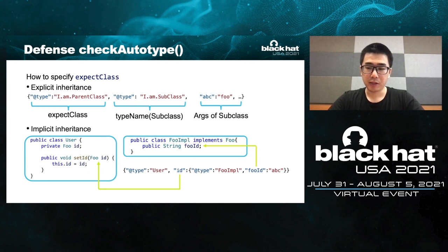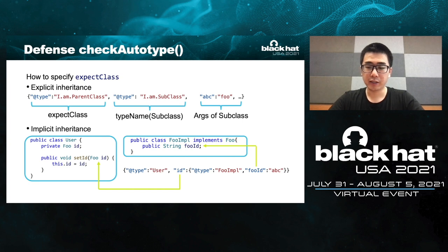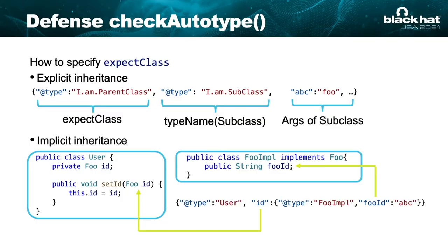The expectClass means inheritance. There are two forms of inheritance in FastJSON. The first is explicit inheritance: you start a JSON object string with two '@type' keys. The first '@type' value is the expectClass, and the second is the subclass which inherits from the expectClass. Another form is implicit inheritance. For example, class 'user' has a field 'id' with interface 'Form'. And the class 'FullImport' implements the interface 'Form'. So you can set the id to a JSON object with '@type: FullImport', triggering implicit inheritance, where the interface 'Form' is the expectClass and 'FullImport' is the subclass.